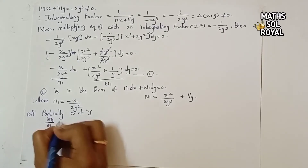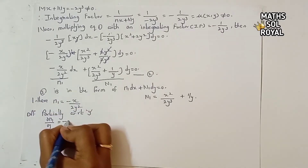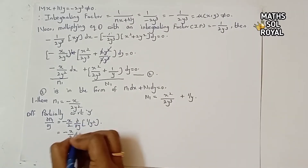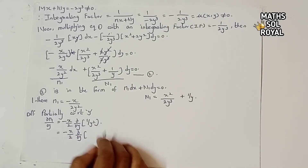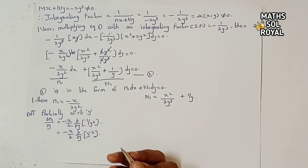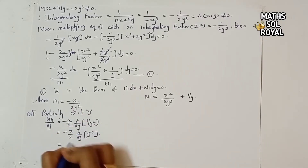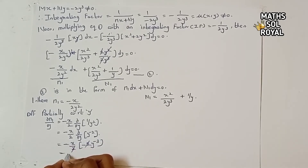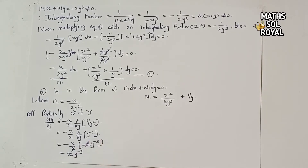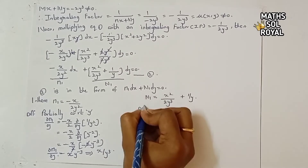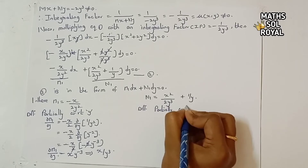Differentiating M₁ partially with respect to y: ∂M₁/∂y = −x/2 · (∂/∂y)(y⁻²) = −x/2 · (−2y⁻³) = x·y⁻³. Writing y⁻³ in the denominator: ∂M₁/∂y = x/y³.